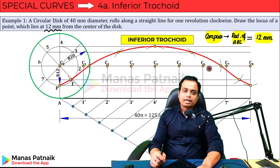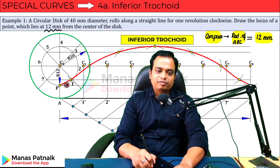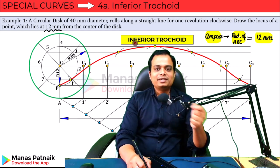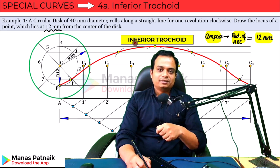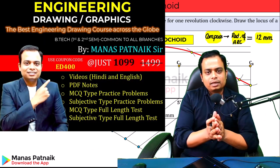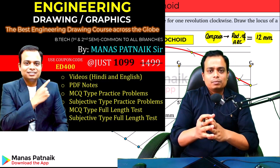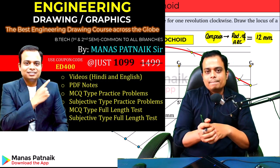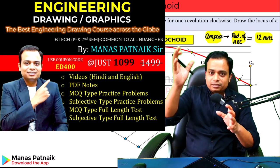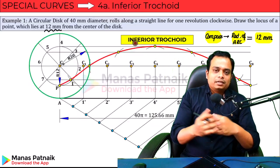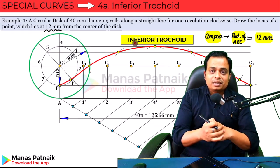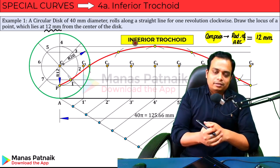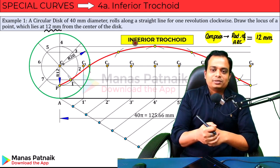When you join all of these points in proper sequence, what you have is a curve known as an inferior trochoid. Remember: if the point is inside the circle, it is an inferior trochoid; if it is outside, it is a superior trochoid — which we'll discuss in the next session. To learn engineering drawing in depth with notes, PDFs, and MCQs, download the Manas Patnaik app and enrol in the course.